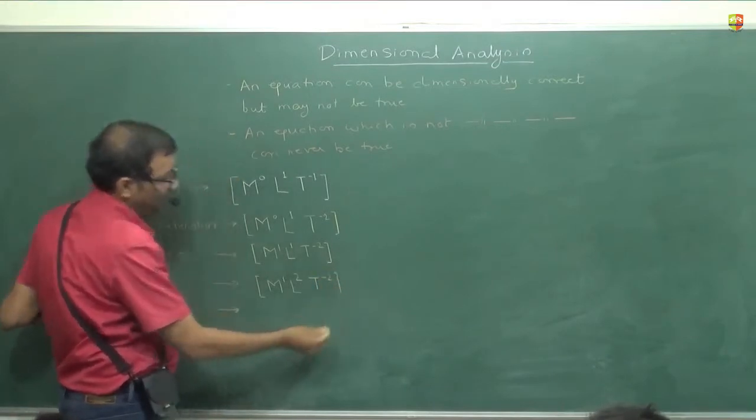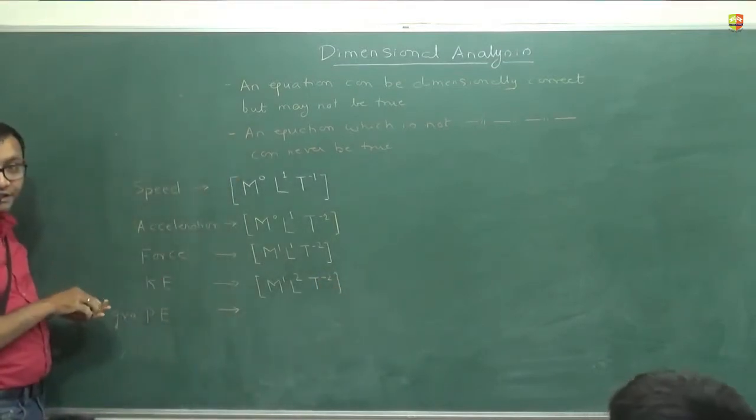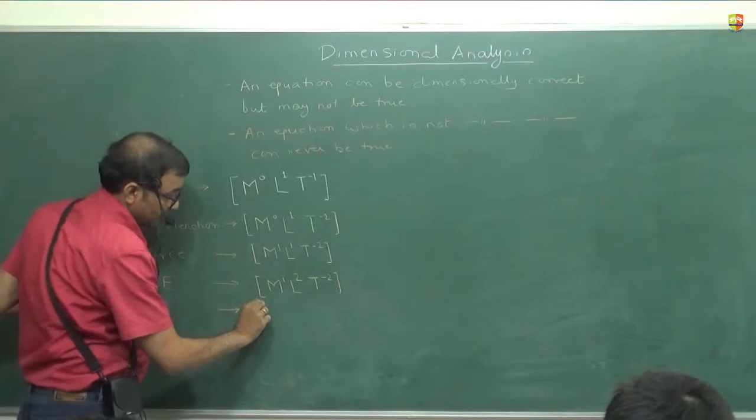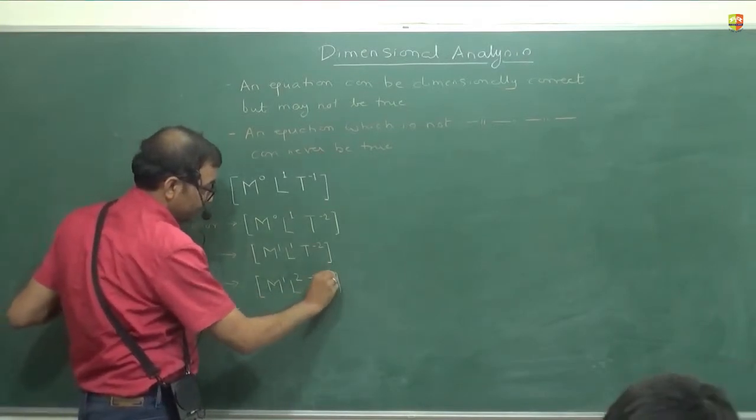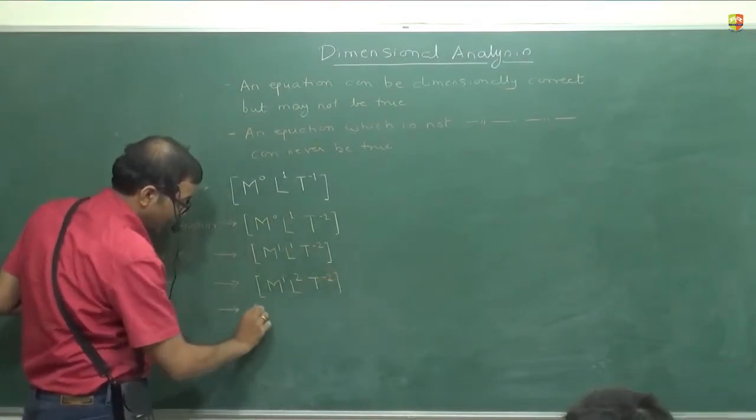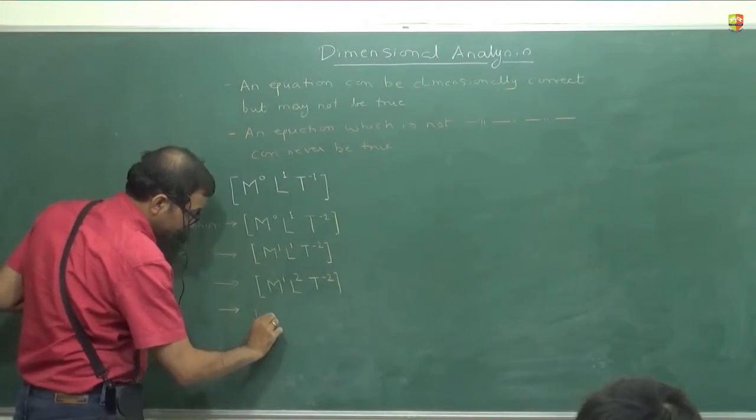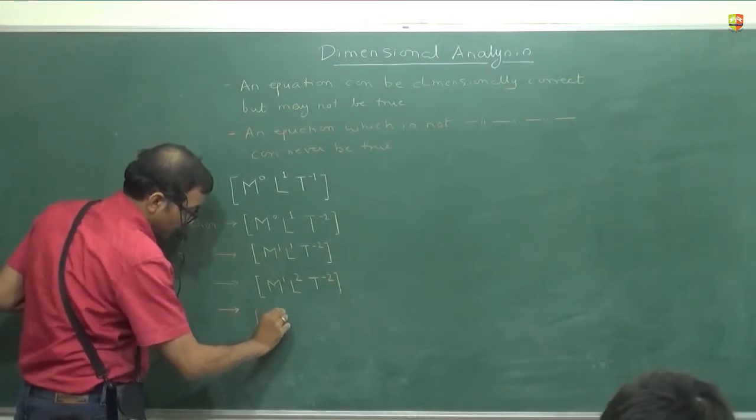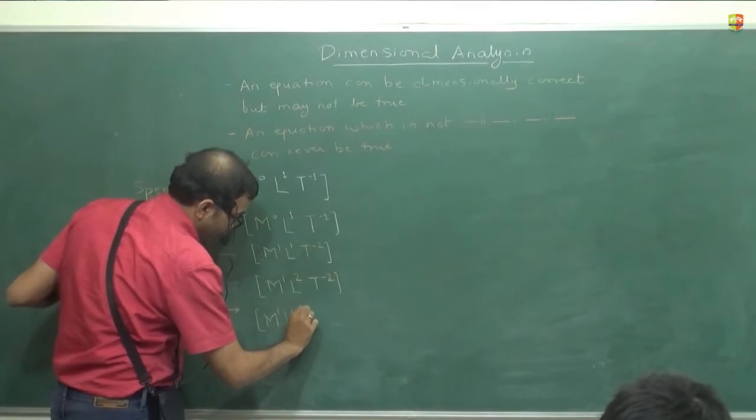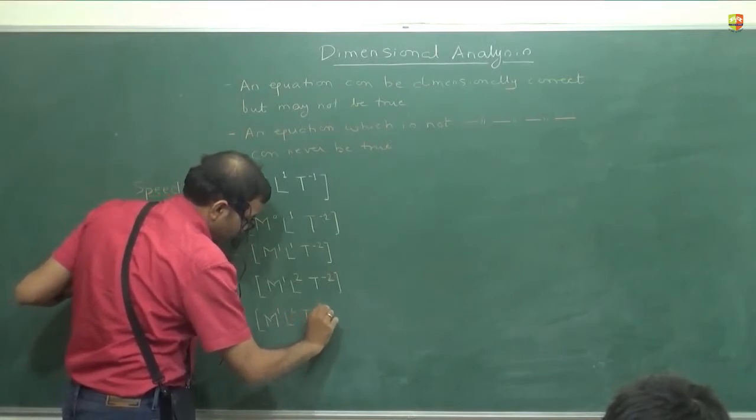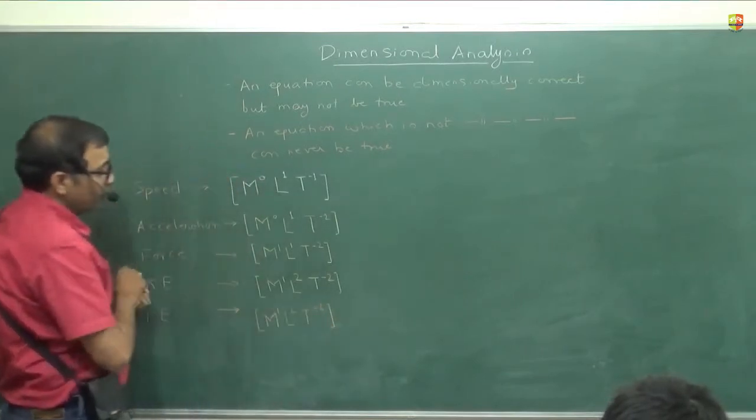What about gravitational potential energy? M, G, M, G, H. No, sir, it's T, minus 1. Is T, minus 1? No, sir, no, sir. It's T, minus 1. Next one is minus 1. Yeah. No, no, no. It's M, 1, L, 2. It will be minus 2. Minus 2.